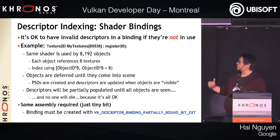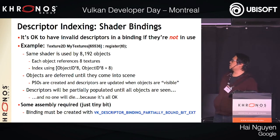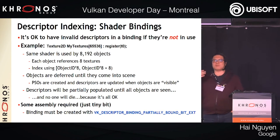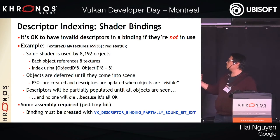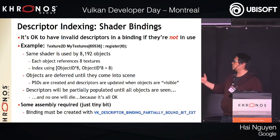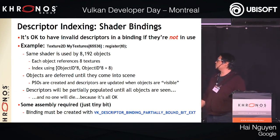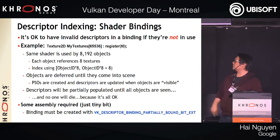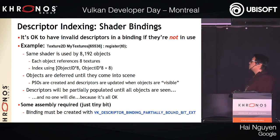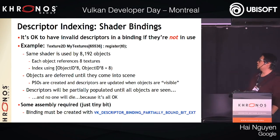Here's a more specific example of updating descriptors while not in use. Say you have a shader reference with 65,000 entries, 8K objects each referencing 8 textures. Your bounds are open-ended on the upper end: object_id * 8 to object_id * 8 + 8. Each object references one of eight textures in this range.